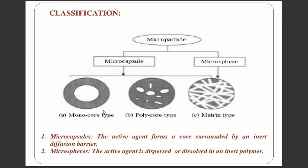We have three types of microcapsules. In the monocore type, we have one core inside the polymer coat. In the polycore type, we have many cores inside the polymer coat. In the matrix type, we have equal distribution of the core material.